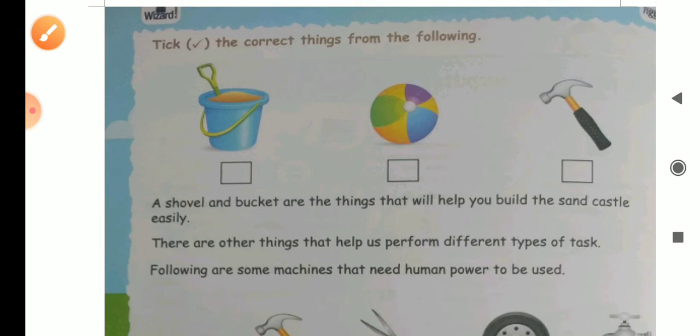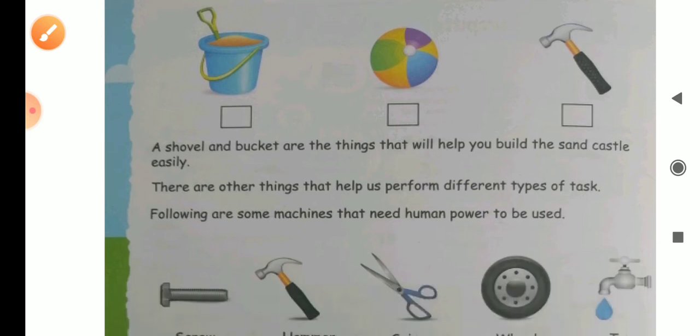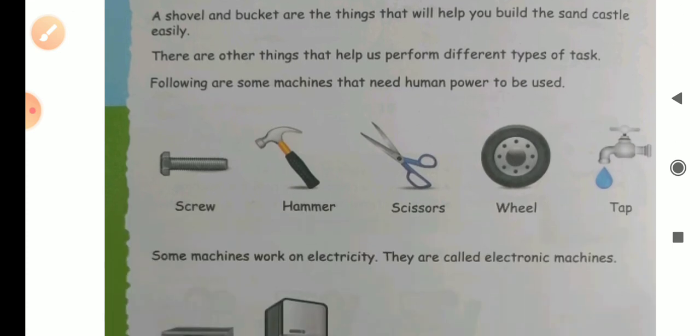There are other things that help us perform different types of tasks. Following are some machines that need human power to use. Here we have some examples like screw, hammer, scissors, wheel and tab. But who needs to work them? Human power to use.